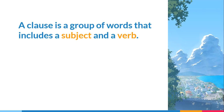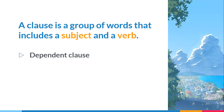A clause is a group of words that includes a subject and a verb. These two elements are obligatory in a clause, while the rest can be optional — but the existence of subject and verb is a must. Clause is divided into dependent and independent clause.